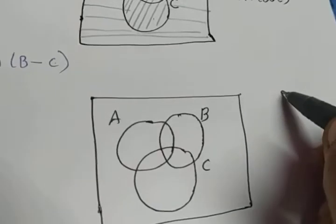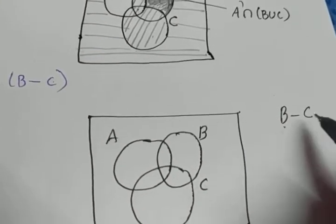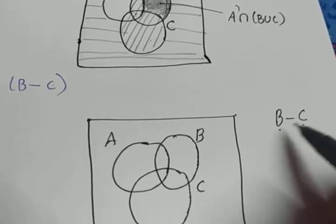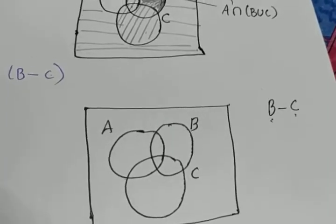B minus C. What was B minus C? B minus C was actually the balance in the set avoiding set C. So, the balance element in set B avoiding the elements in set A.